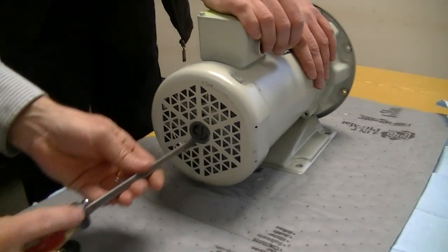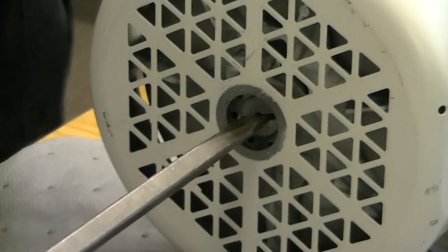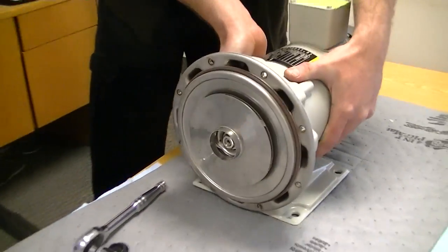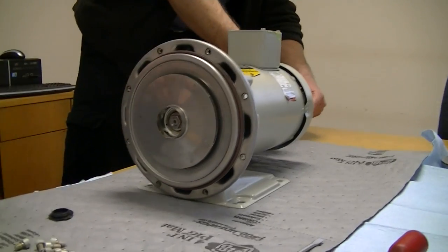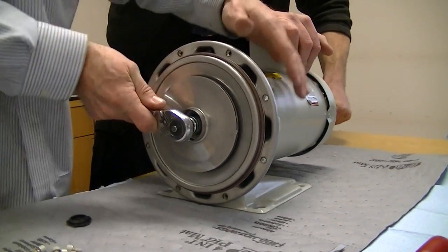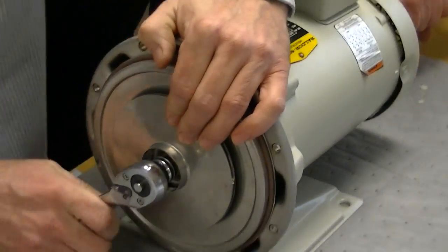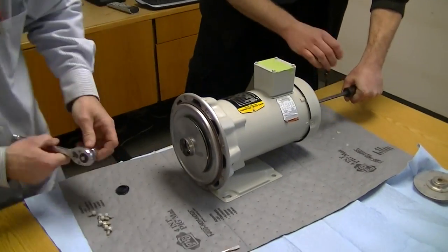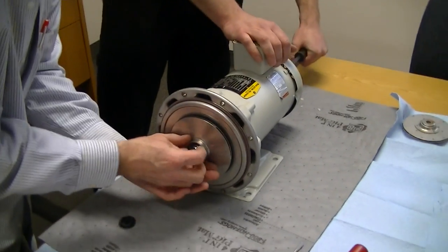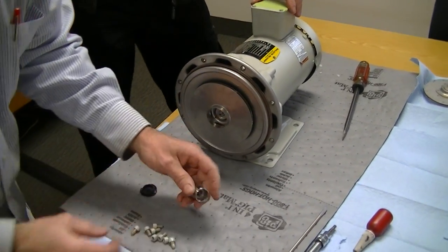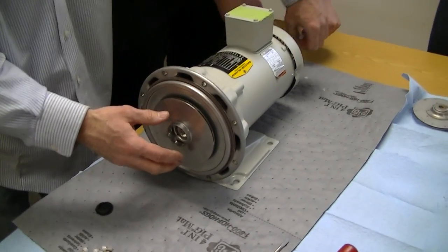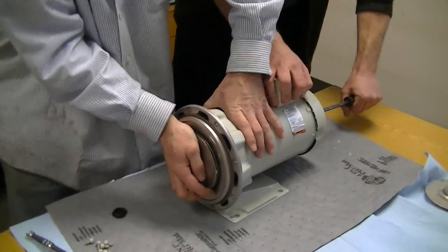We're going to hold that with a screwdriver to loosen the impeller. So you hold that, and then you're going to take your 5/8 wrench and you're going to loosen this impeller. There's a nut on here that's coming right off. You take this nut off because the shaft of the motor is threaded.